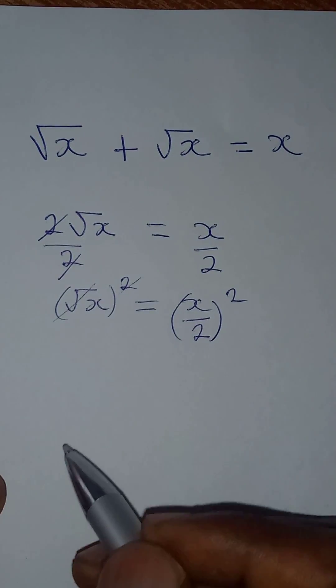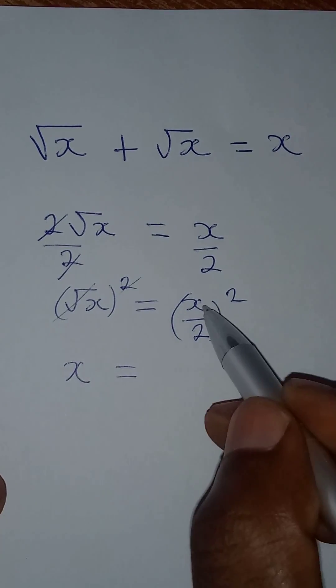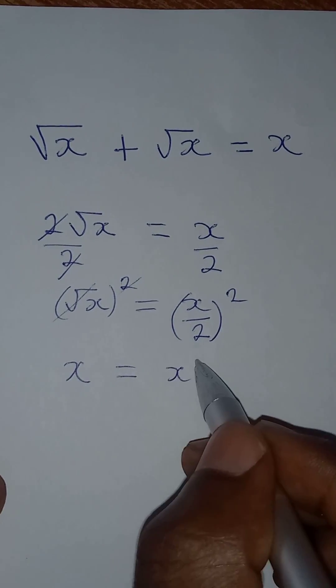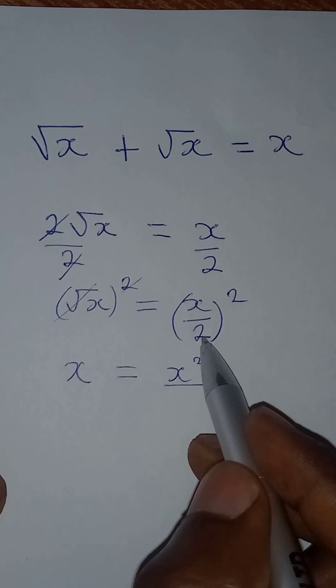Square and square root will cancel. So I have x equal to x squared over two squared.